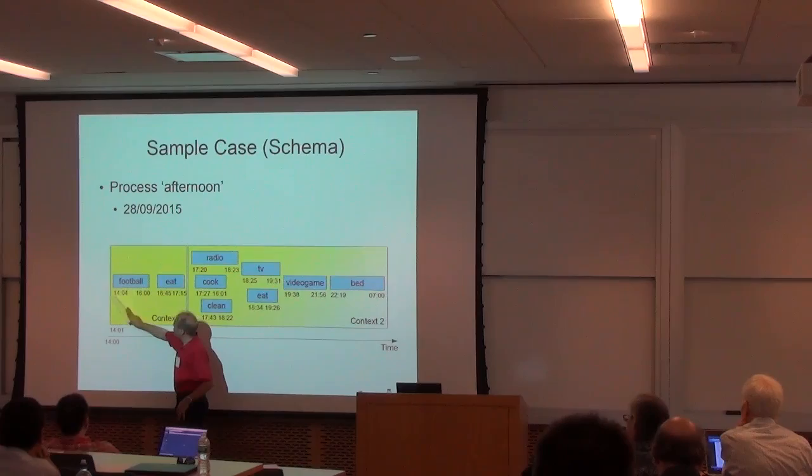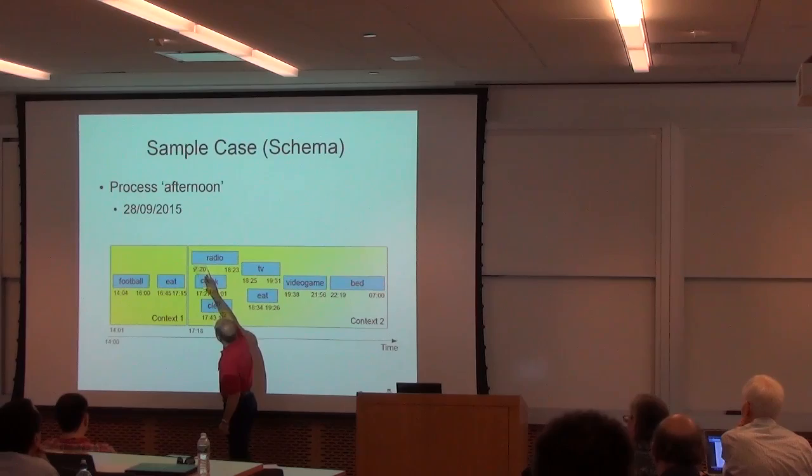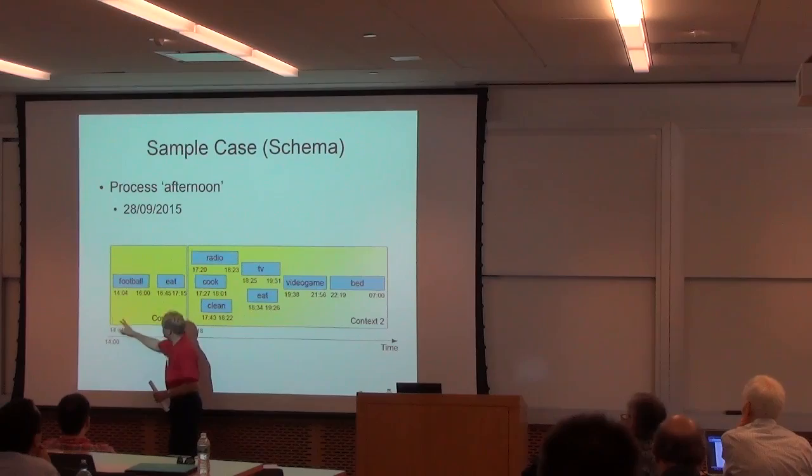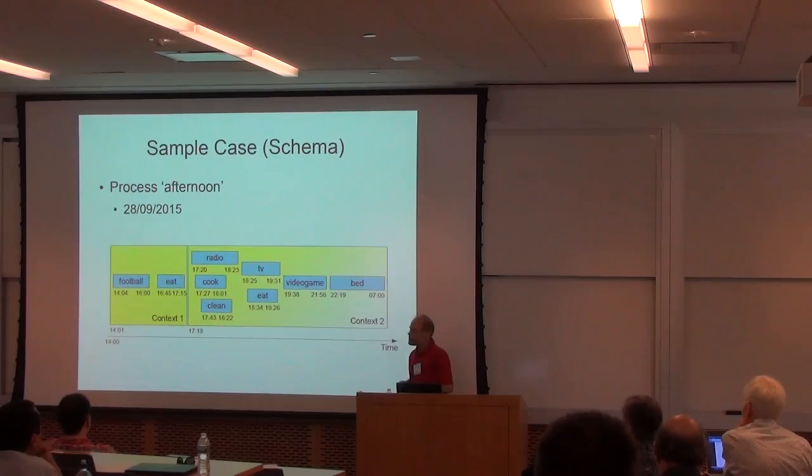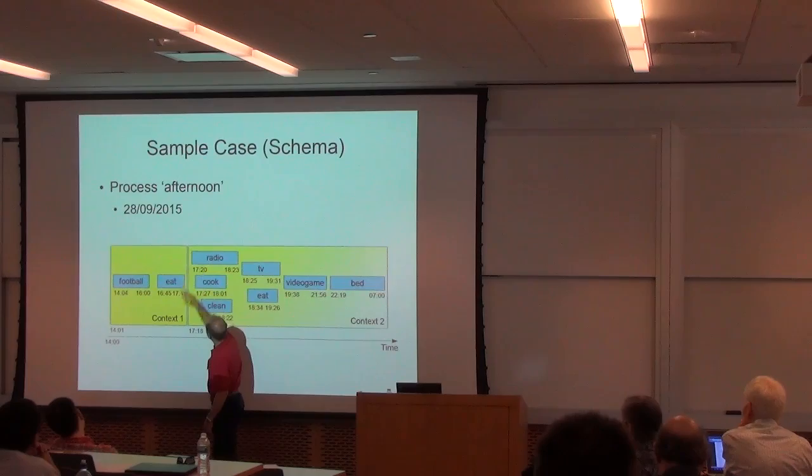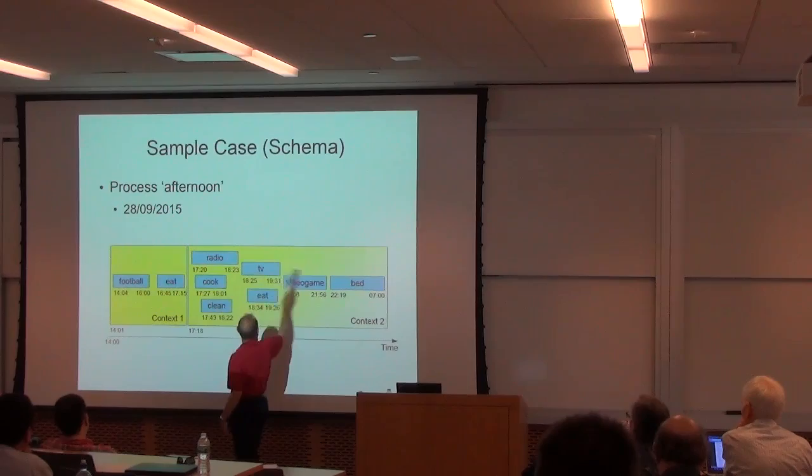For instance, in this case, from this time to this time, this person plays football, then he eats, then concurrently first starts listening to the radio, during this activity also he cooks and after a while he cleans and so on. We can show that there are contexts in which these activities take place. For the sake of simplicity, we show just the two contexts. We want to describe both the relationships between these activities, so this is next, this one, these three are next, these two are next, and so on. These happen in this context, and all of these happen in this other context.